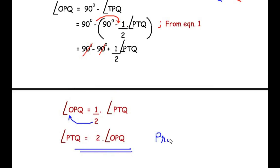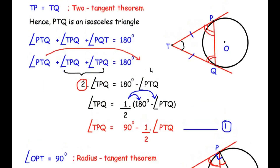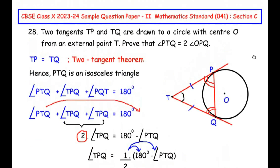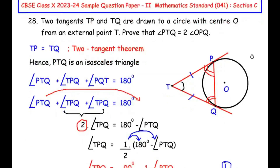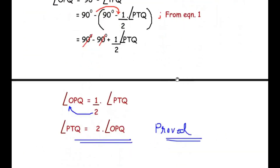To prove this, we made use of two circle theorems: the two tangent theorem and the radius tangent theorem. I hope you understood all the steps and liked the video. If you know any other way of solving this, do comment below. If you are liking my videos, like, share and subscribe to my channel. Thank you for watching.